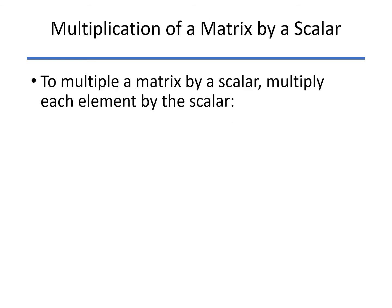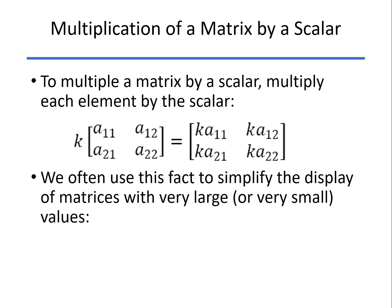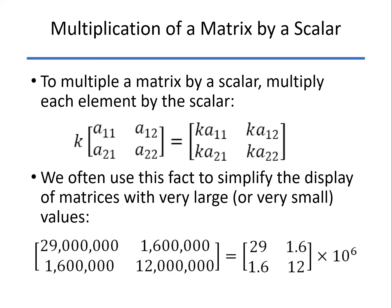Multiplication by a scalar, again, very easy to do. Multiply each element by that scalar. This comes in handy sometimes if we want to display a matrix that has very large or very small numbers. For example, 29 million, 1.6 million, etc., can be shown in a compact way with 29, 1.6, etc. in the matrix, and then times 10 to the 6 means that each one of those elements gets multiplied by a million.